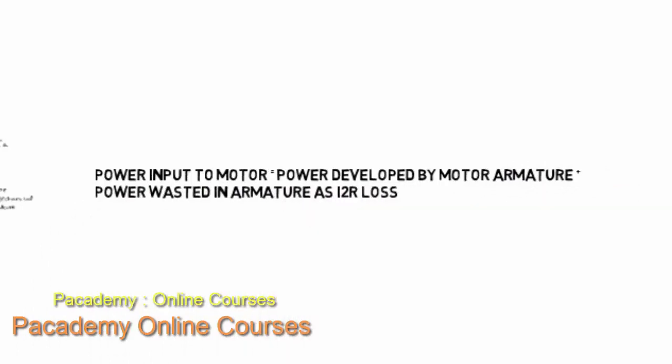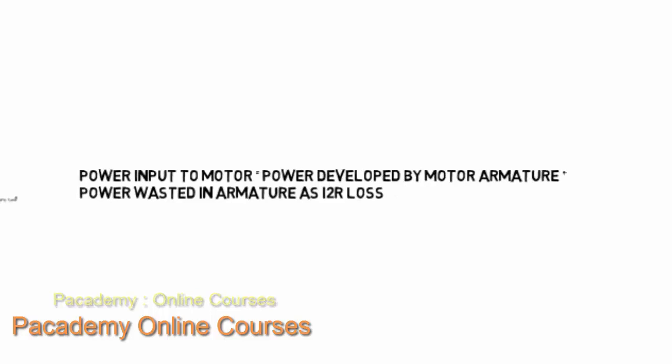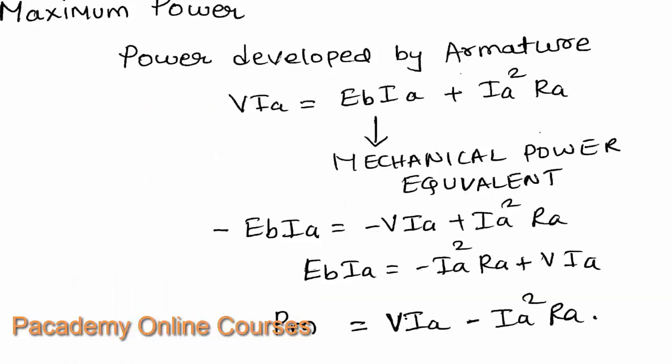This equation can be generalized as: power input to the motor equals power developed by the motor armature — that is the mechanical power developed — plus the power wasted in the armature as I²R copper losses. The power developed by the motor is E_B·I_A, and the power lost is I_A²·R_A. The shunt field winding current is very negligible and can be neglected in this case.